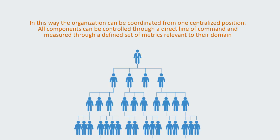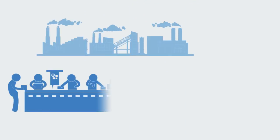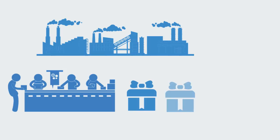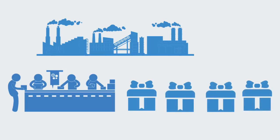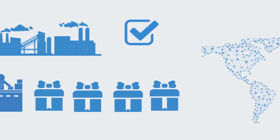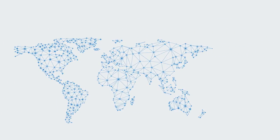This model of the industrial organization was developed in response to a particular environment that required the large-scale mass production of standardized products and services in a stable and predictable fashion. Within this context, the industrial model for organization has, in many ways, proved itself highly successful. But faced with the changing environment of the 21st century, its limitations are becoming increasingly clear to us.